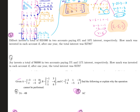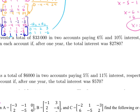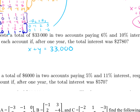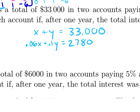Dilbert invests a total of thirty-three thousand dollars in two accounts paying six percent and ten percent interest respectively. After one year the total interest was two thousand seven hundred and eighty dollars. Setting up the system: x plus y equals thirty-three thousand for the total amounts. The interest equation is 0.06x plus 0.1y equals two thousand seven hundred eighty, where x is the six-percent account and y is the ten-percent account.